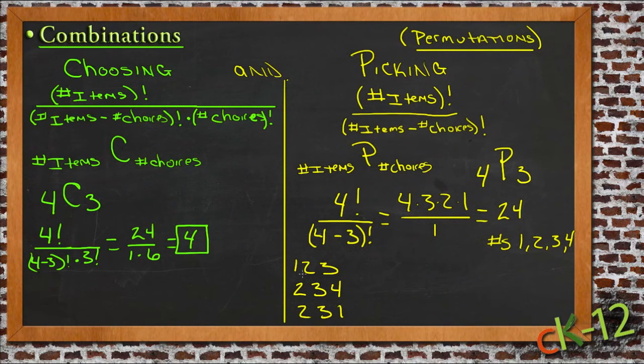That's because every time we pick one group of numbers, say 1, 2, 3, with permutations, 1, 2, 3 could be written as 1, 2, 3, or 3, 2, 1, or 3, 1, 2, or 1, 3, 2.